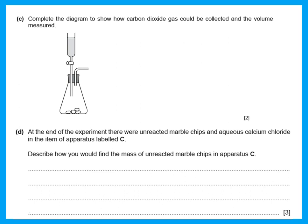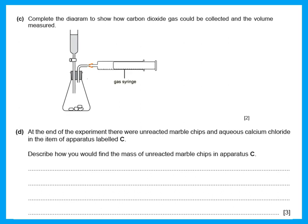Complete the diagram to show how carbon dioxide gas could be collected and the volume measured. Carbon dioxide dissolves in water, so we should not collect it over water. To collect it and measure the volume, we use a gas syringe. Please practice drawing a gas syringe — it should show two tubes or a plunger inside with graduation markings.